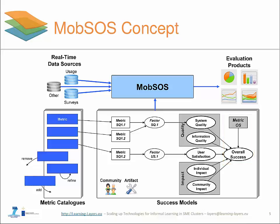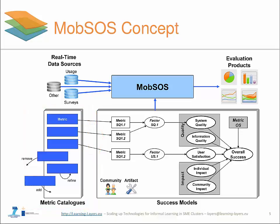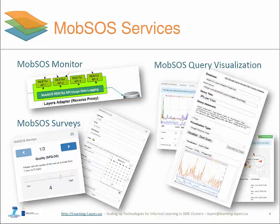While certain metrics must be custom tailored to specific evaluation contexts, a majority of generic metrics is universally applicable. For this reason, Mobsource makes use of metric catalogues, allowing modular metrics reuse across success models. Finally, Mobsource supports the creation of evaluation products such as reports, dashboards or infographics that ultimately create success awareness for Layers Boxes and their artifacts.